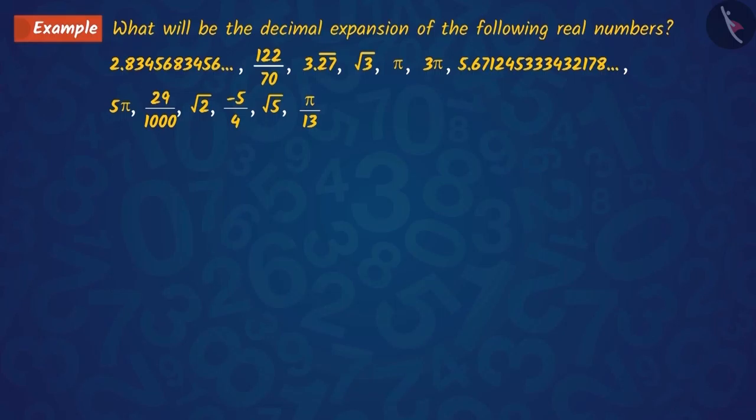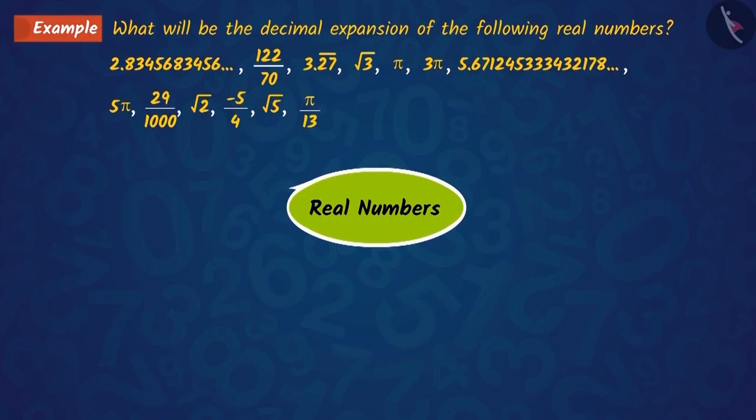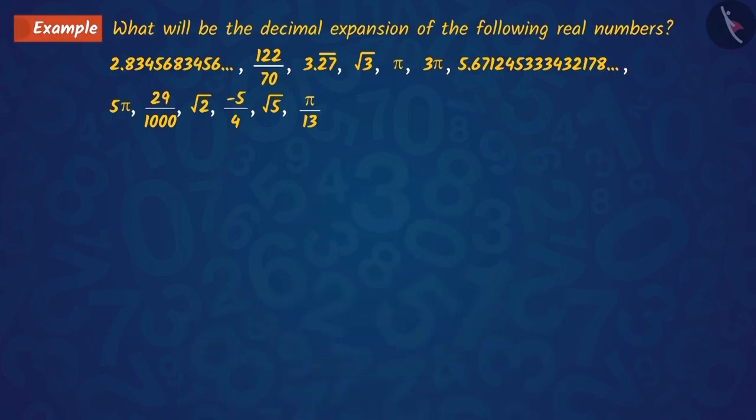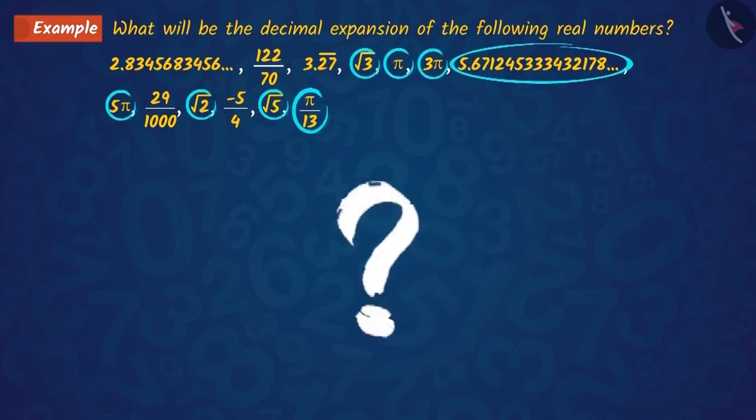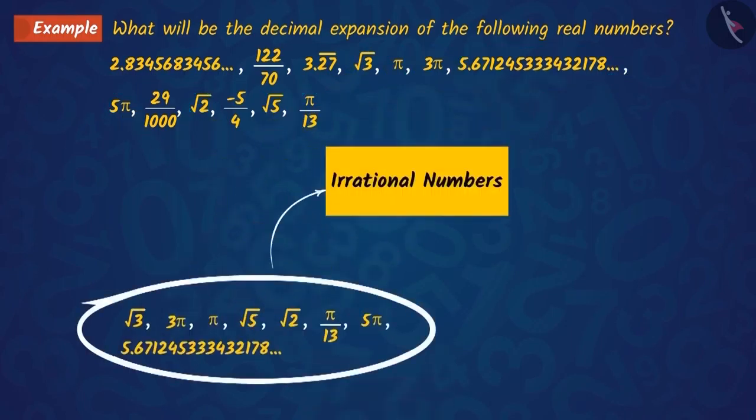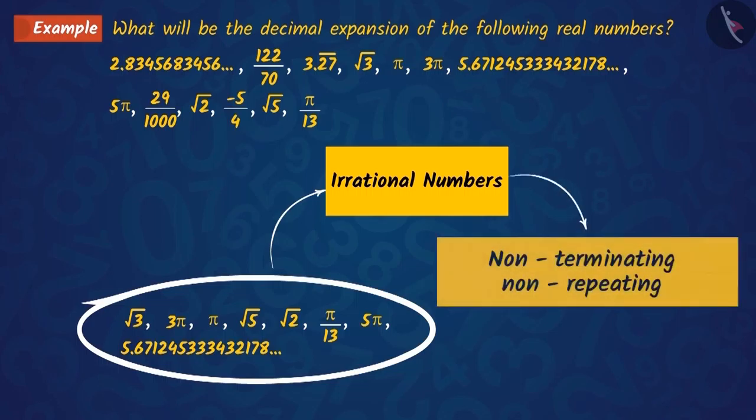What can you tell about these numbers by looking at them? These are all real numbers, and real numbers are a set of rational and irrational numbers. So first, we look at these irrational numbers. Can you guess what their decimal expansions would be like? We know that the decimal expansion of all irrational numbers is non-terminating, non-repeating.